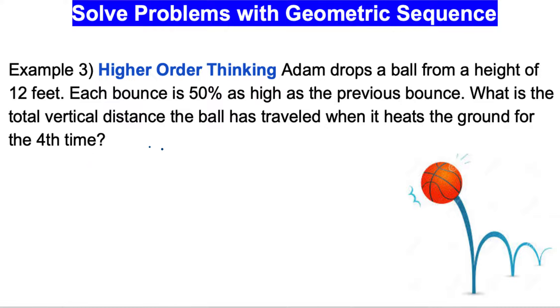So what we are doing here, first of all, we are trying to find the distances from the ball to the ground. The first time is 12 feet, and we want to know the second time, third time, and the fourth time when it hits. The question is asking us to add all these distances. We can find this by using geometric sequences because each time is 50% less the distance.